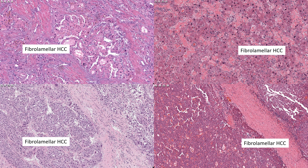It turns out that all four of these are fibrolamellar carcinoma — case one, two, three, and four. This tells me that not all fibrolamellar carcinomas show that classic morphologic appearance of lamellar-type fibrosis and a pseudoglandular pattern. You do need molecular assays in a proportion of cases. At least the way we have started defining this tumor is not by morphology, but by the basis of a genetic alteration.